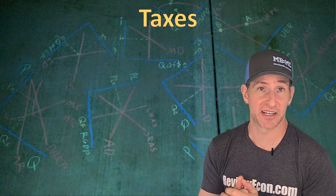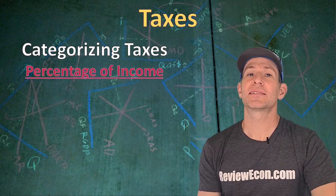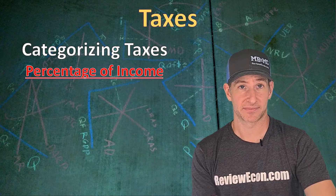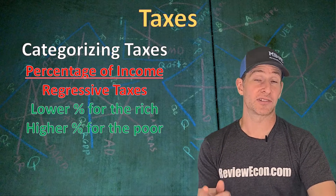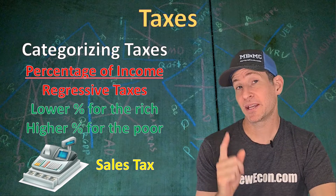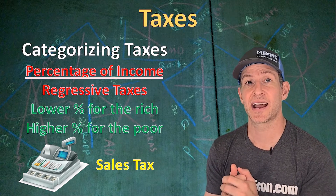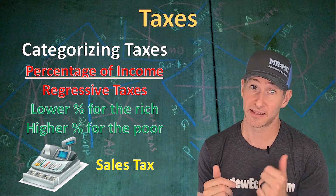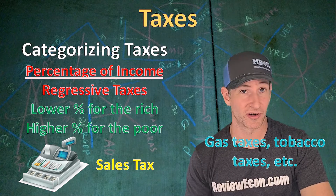Taxes can make distributions of income more equal or less equal, and we have different ways of categorizing types of taxes based on the percentage of income they make up for the payers. The first type is a regressive tax, which has a lower percentage of income for the rich and a higher percentage for the poor. Sales taxes appear proportional but are actually regressive — a dollar of sales tax is a much higher percentage of income for a lower-income person than for Bill Gates. Gas taxes, tobacco taxes, and many other taxes are also regressive.